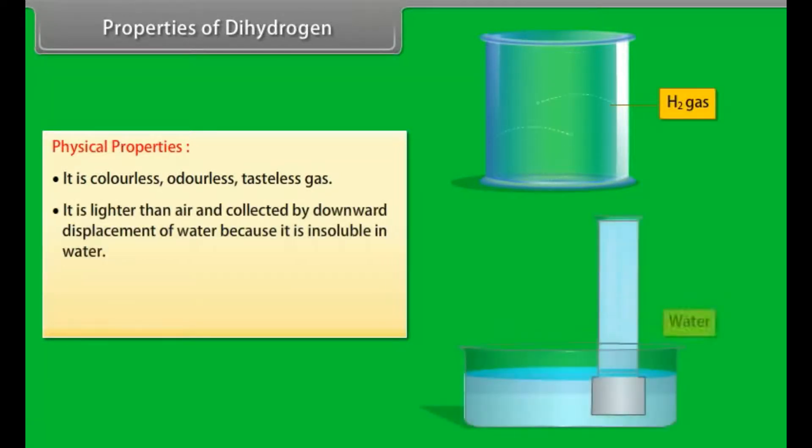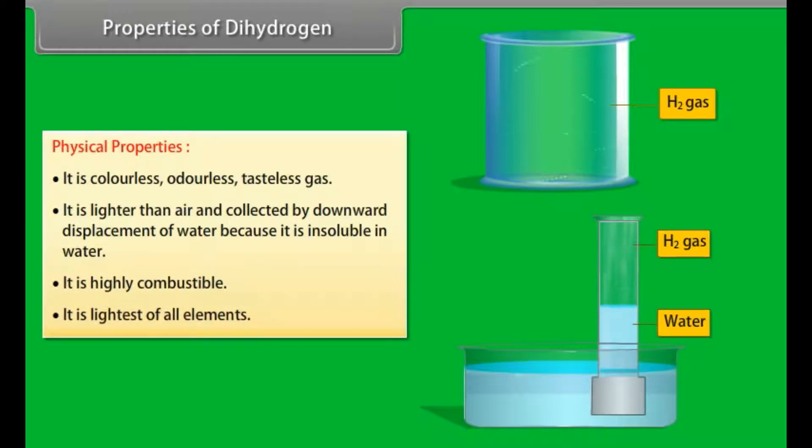Properties of dihydrogen. Physical properties: It is colourless, odourless, tasteless gas. It is lighter than air and collected by downward displacement of water because it is insoluble in water. It is highly combustible. It is the lightest of all elements.